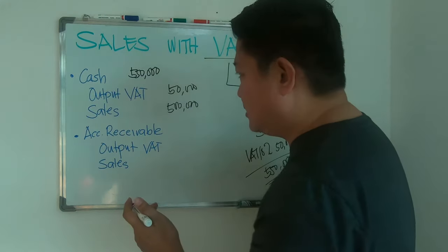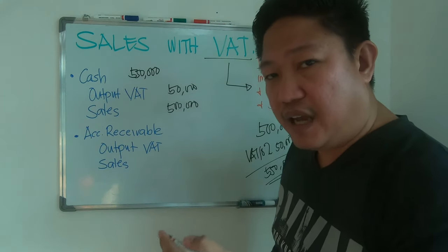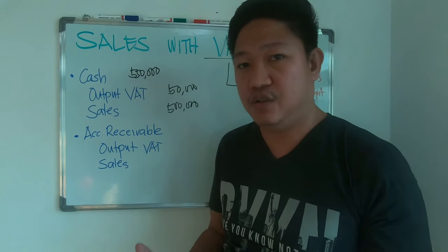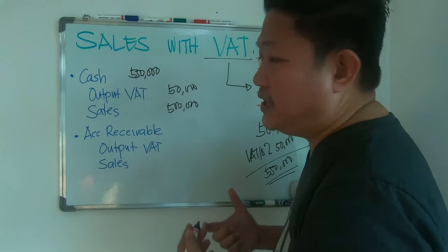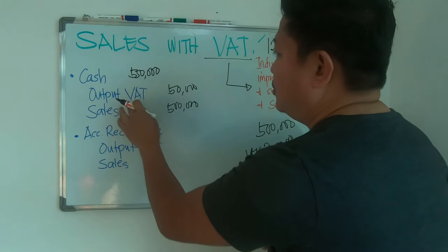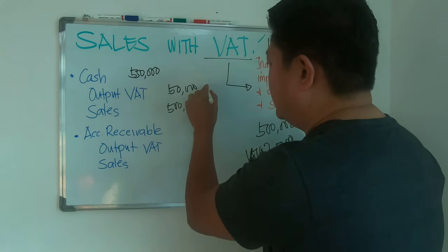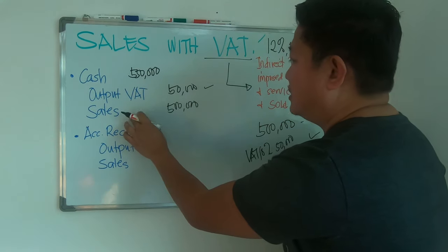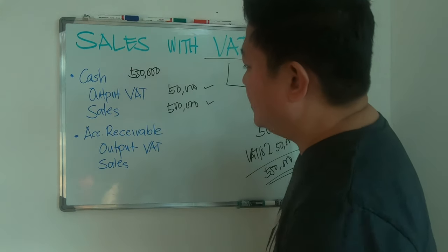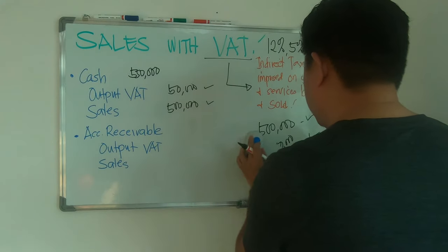Cash will be part of your balance sheet under current assets. Output VAT is a current liability because you have to remit it to the government later — you are just a collecting agent. Sales of 500,000 is recorded as income.